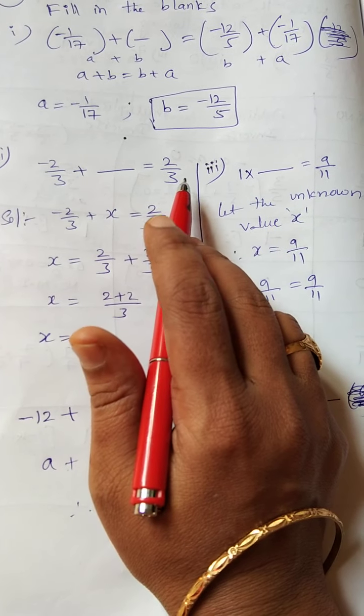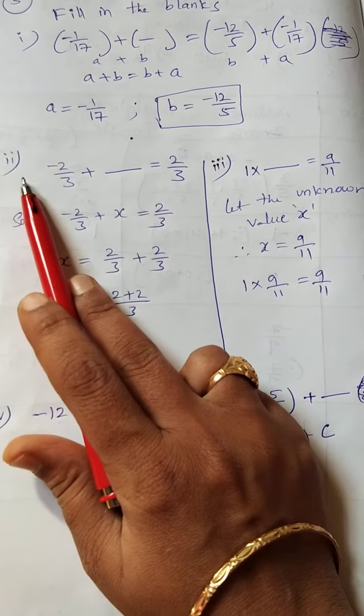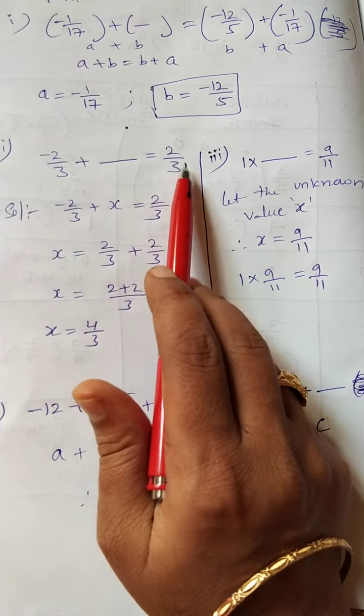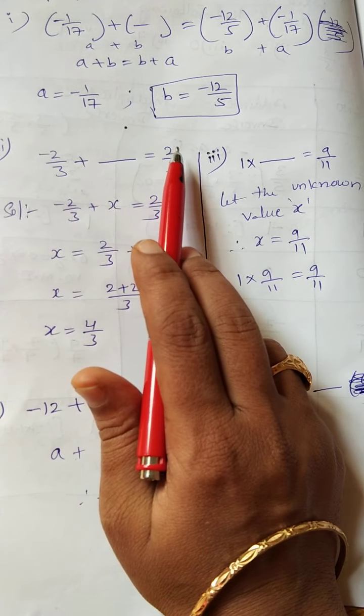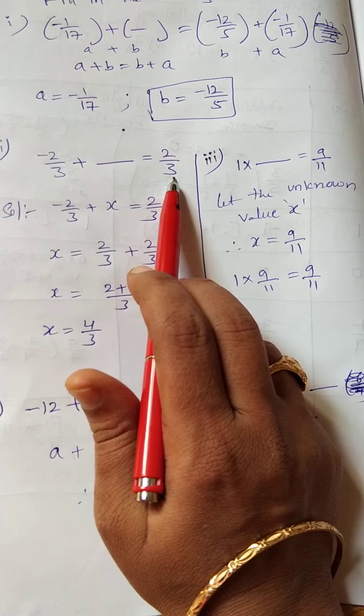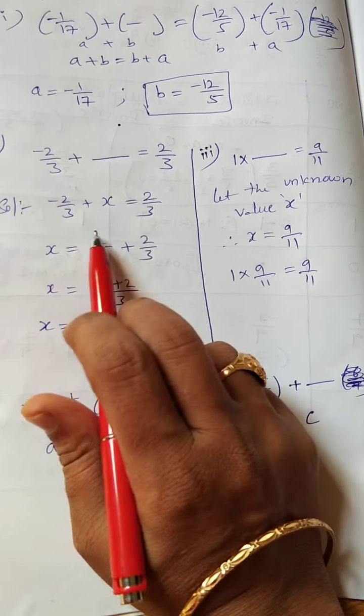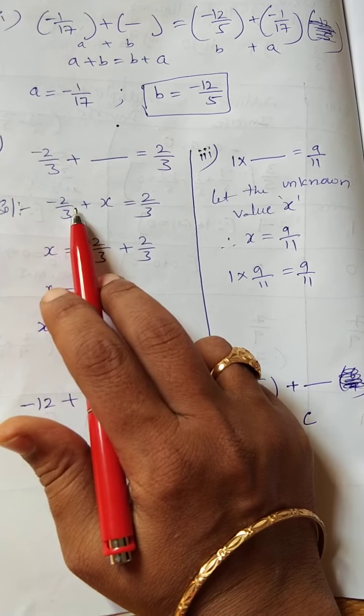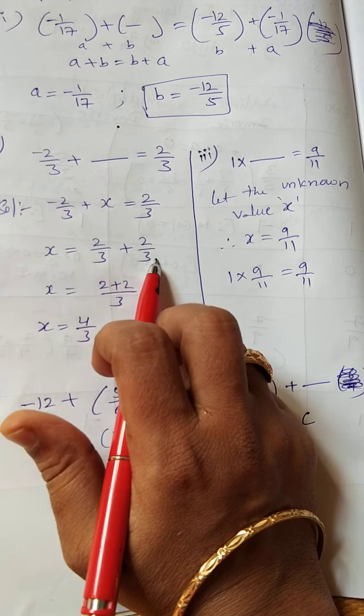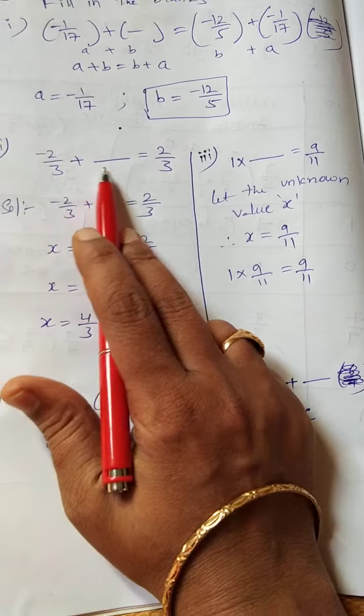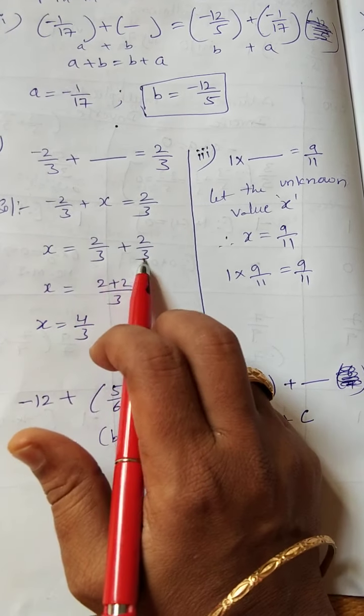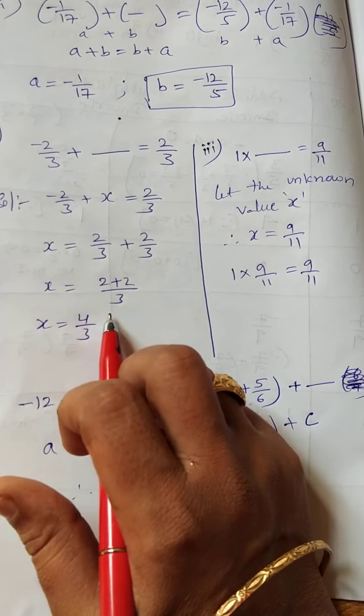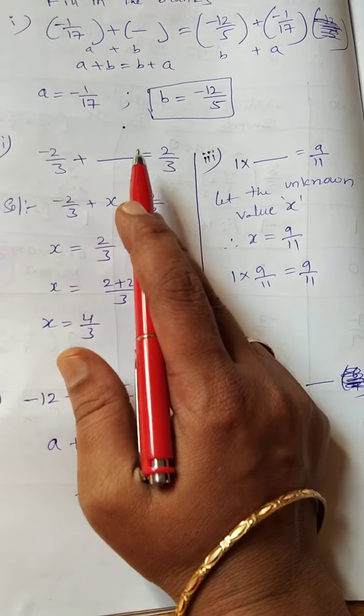Second part: -2/3 + blank = 2/3. To get the answer 2/3, take the unknown value as X. So -2/3 + X = 2/3. Transposing, X = 2/3 + 2/3. These are like fractions, so directly add the numerators: 2 + 2 = 4, giving 4/3. The unknown value is 4/3.